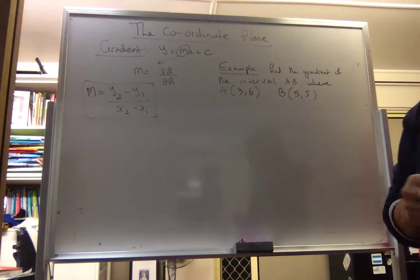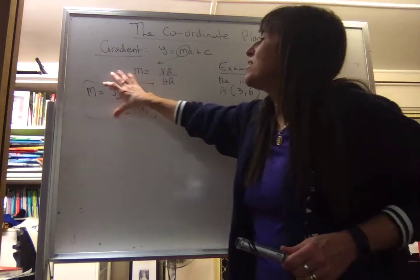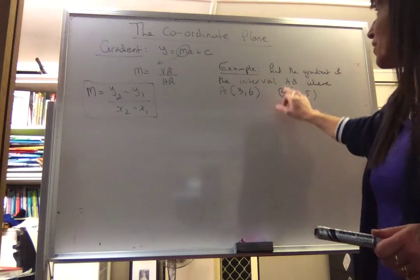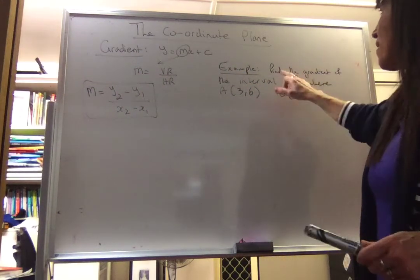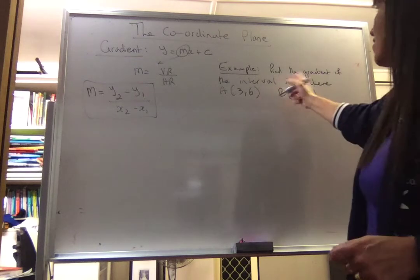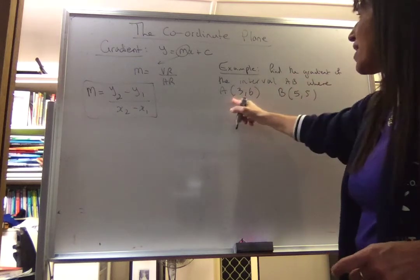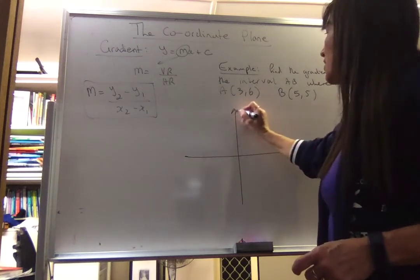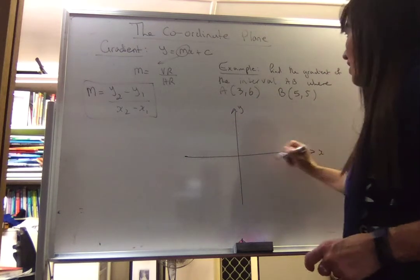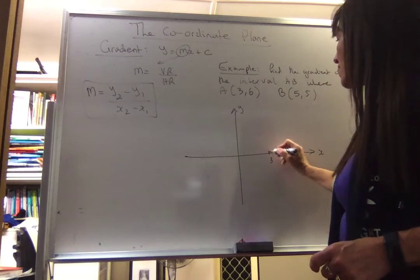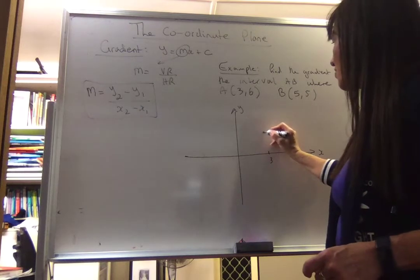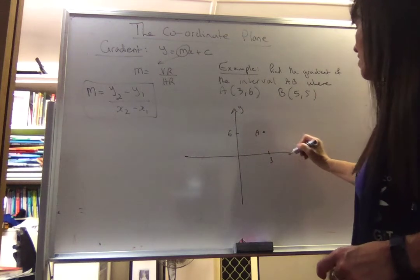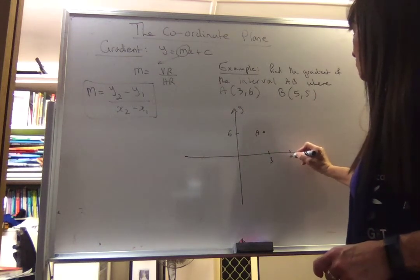How do we get this formula? I'm going to show you using this example. If you think about this, we're asked to find the gradient of the interval AB, where A equals (3, 6). Let's just quickly draw this. With any of these questions, if you ever get stuck, always sketch — it just helps. So here's (3, 6), that's my point A, and my B is at 5.